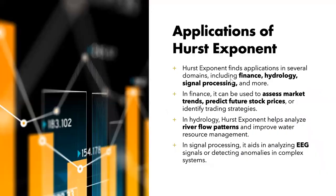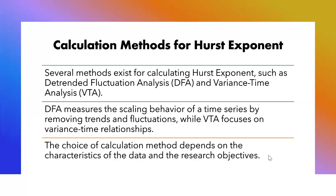The applications of the Hurst Exponent include finance, hydrology, and signal processing. In finance, it is used for assessing market trends and predicting future stock market behavior. In hydrology, it helps analyze river flow patterns. In signal processing, it can be used to analyze EEG signals or detect anomalies in complex systems. Other calculation methods include detrended fluctuation analysis and variance-time analysis. The first scales the behavior of a time series by removing trends; the second focuses on the variance-time relationship. We select the method depending on the data characteristics and research objectives.